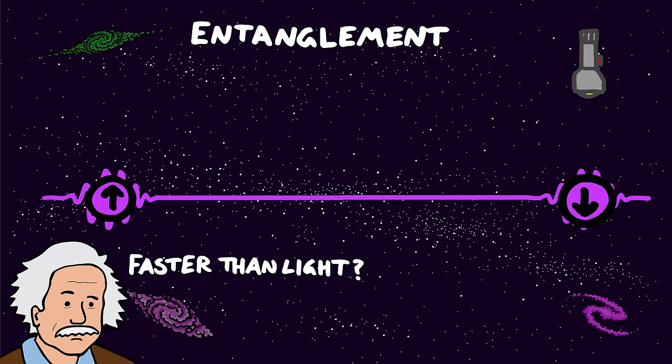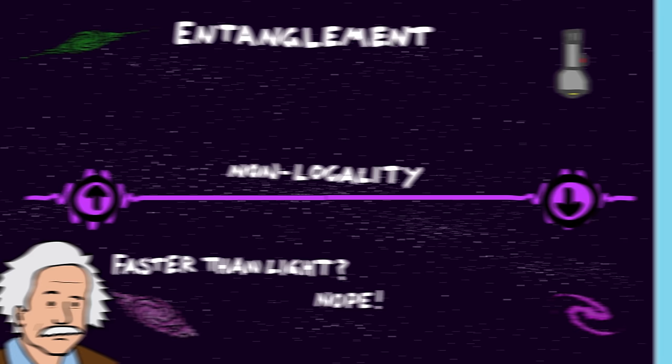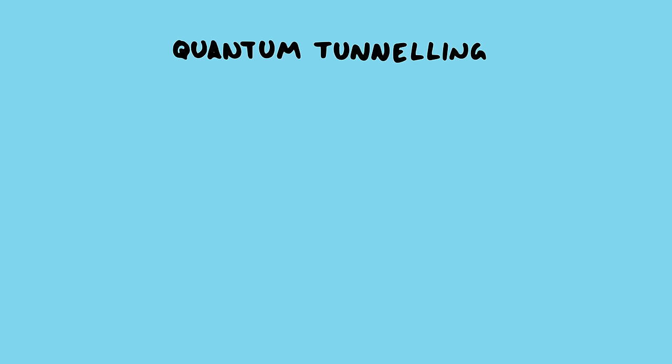Einstein was very uncomfortable with this idea because if you measure one of the particles here, you instantaneously know what the other will be, even if it's billions of miles away. And that's got a sort of whiff of faster than light communication, which is not allowed by the theory of relativity. But it turns out you can't actually use this to communicate information, because the measurements give you random results. But the fact that they are correlated means that somehow there is a link that stretches over that distance. This is called non-locality.